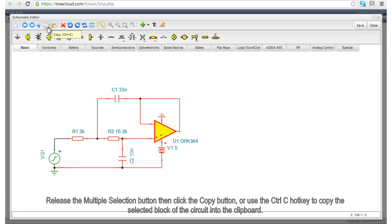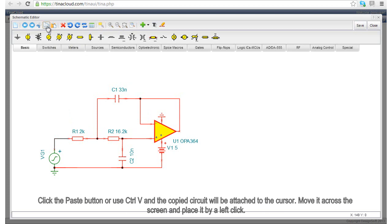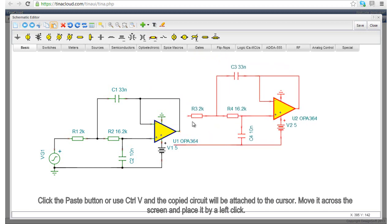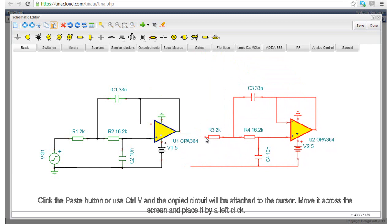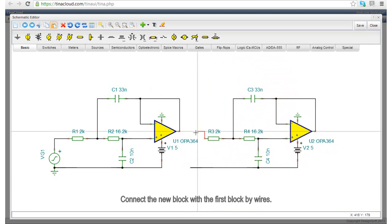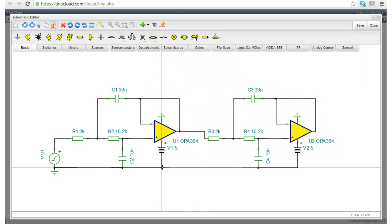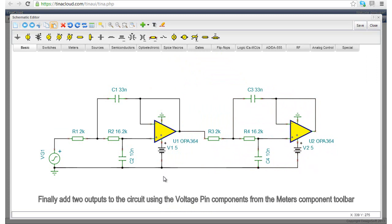Release the multiple selection button, then click the copy button or use the CTRL-C hotkey to copy the selected block of the circuit into the clipboard. Click the paste button or use CTRL-V and the copied circuit will be attached to the cursor. Move it across the screen and place it with a left click. Connect the new block with the first block by wires.